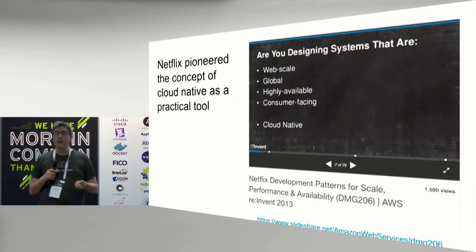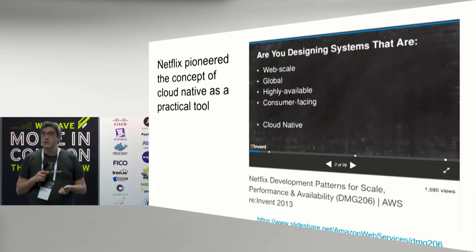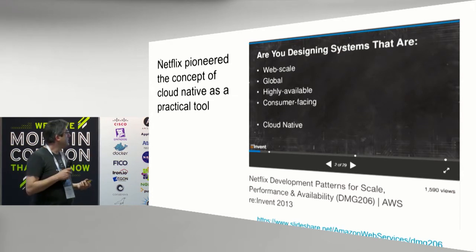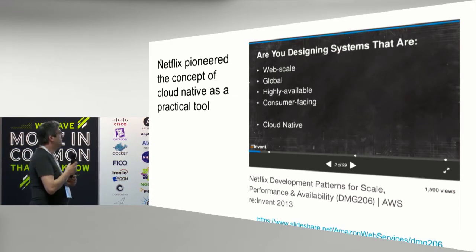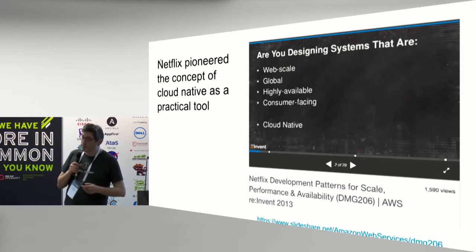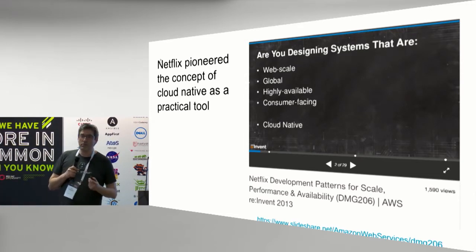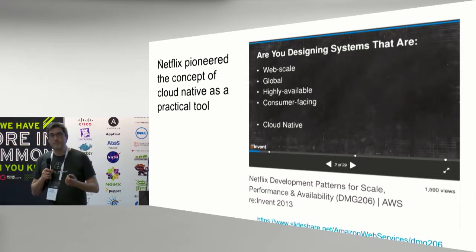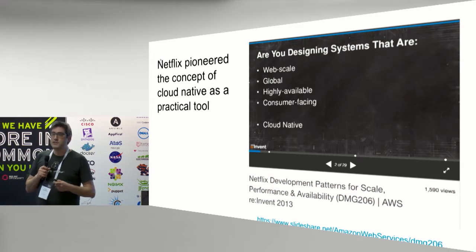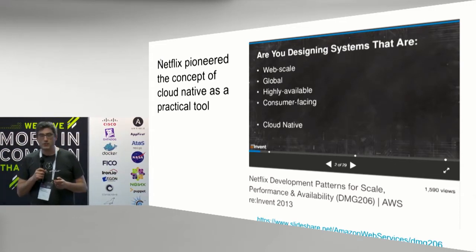I mentioned Heroku — another key antecedent is Netflix. Netflix decided they were going to deliver DVDs by post, originally. And at some point they thought, this Amazon 1999 business model isn't working out too well — we're not very different from a Blockbuster at the end of the day, and people always forget to send their DVDs back.